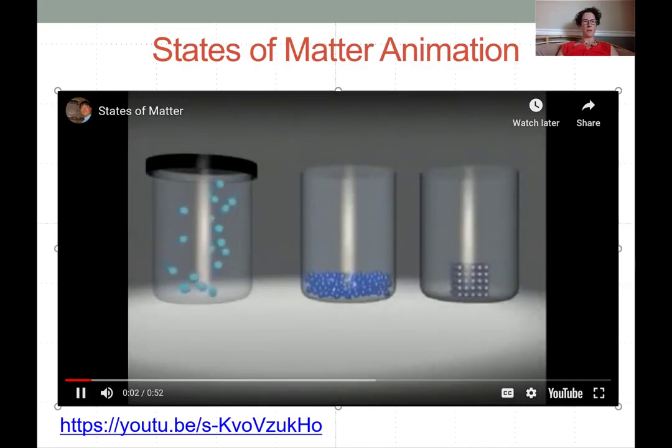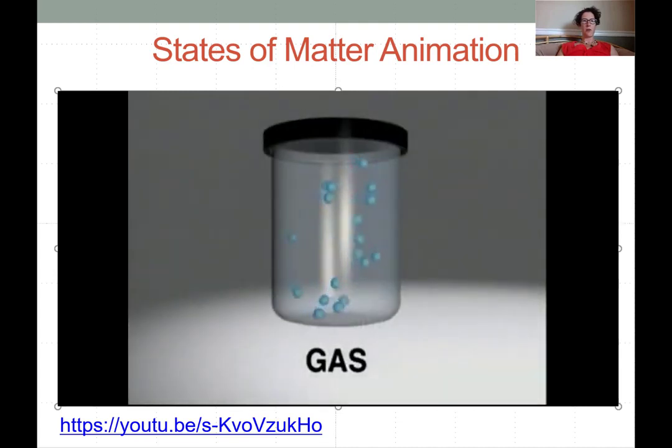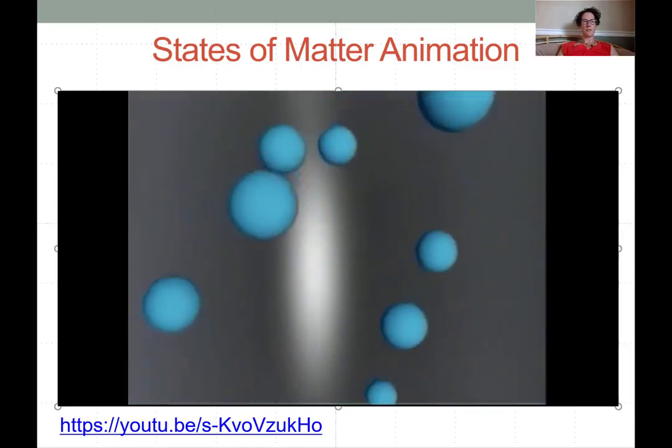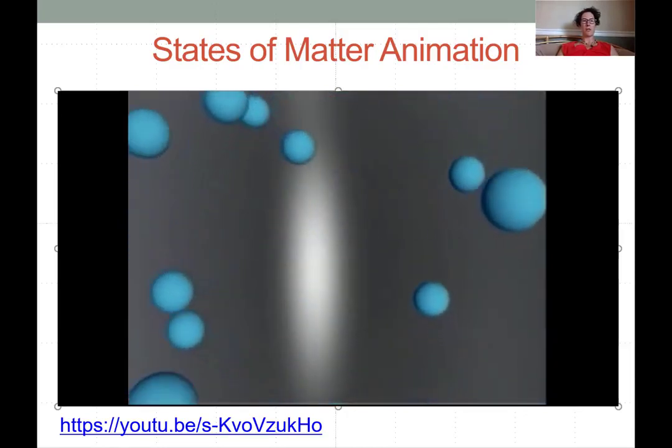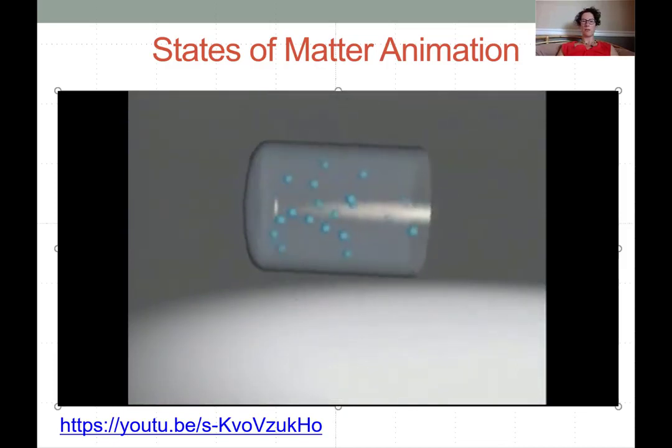The three states of matter are gas, liquid, and solid. Gases assume the shape and volume of their container and have complete freedom of motion. The particles of a gas are separate from each other, move in straight lines, and they change direction only when they collide with each other or the sides of their container.